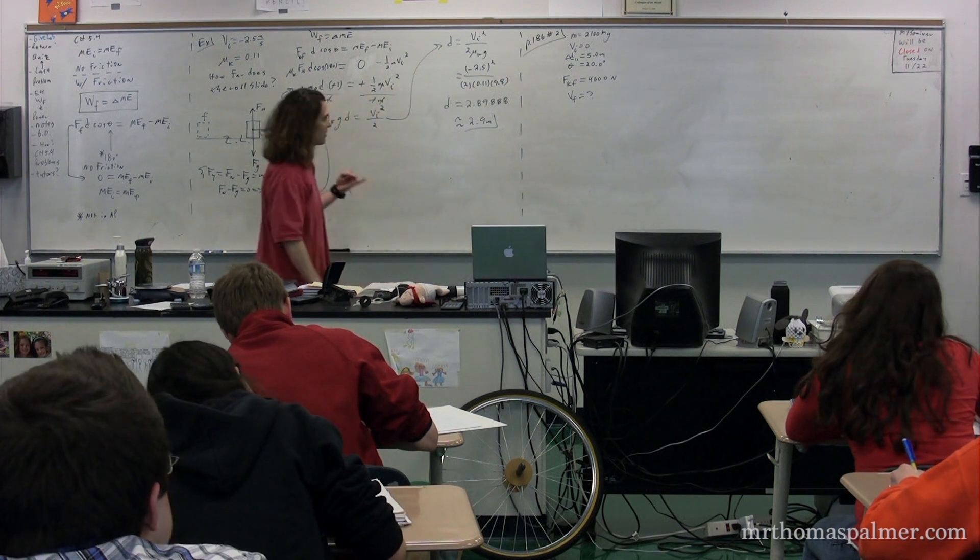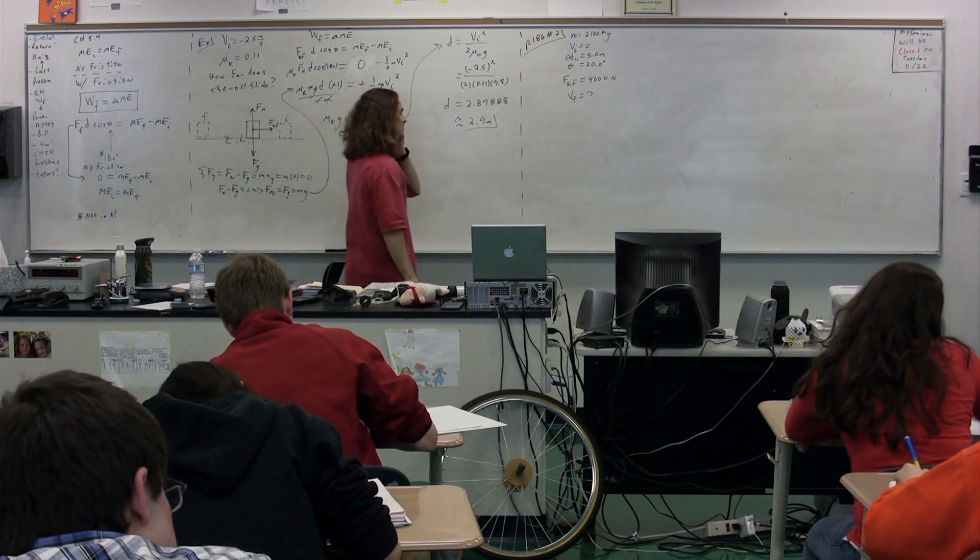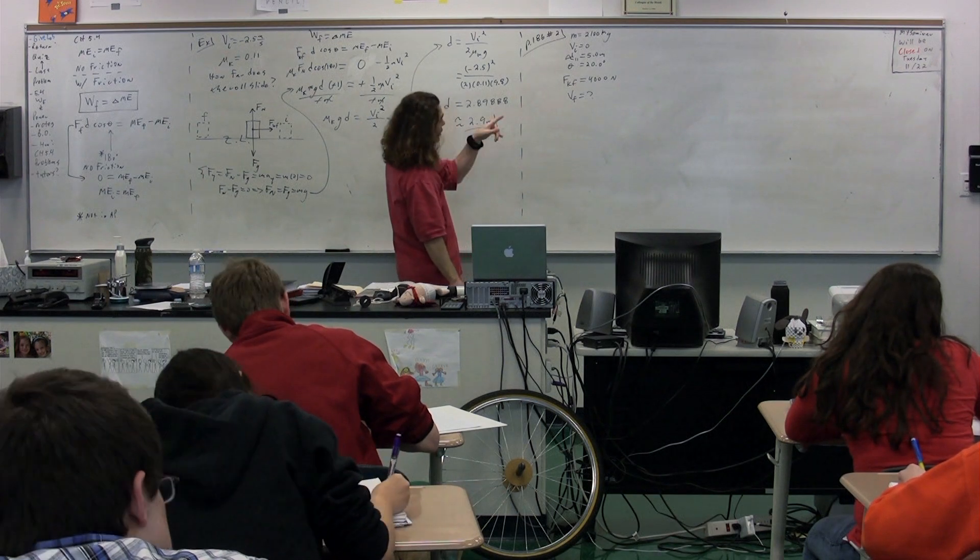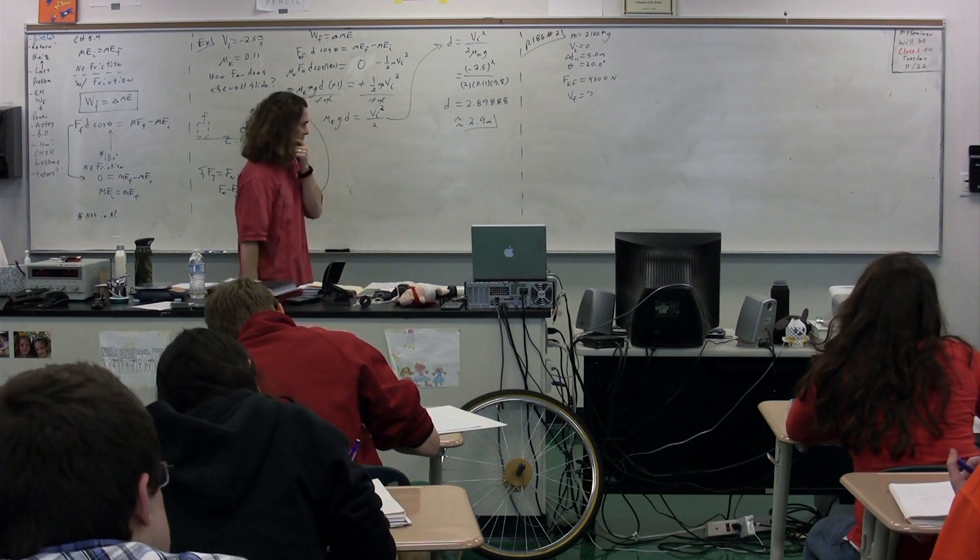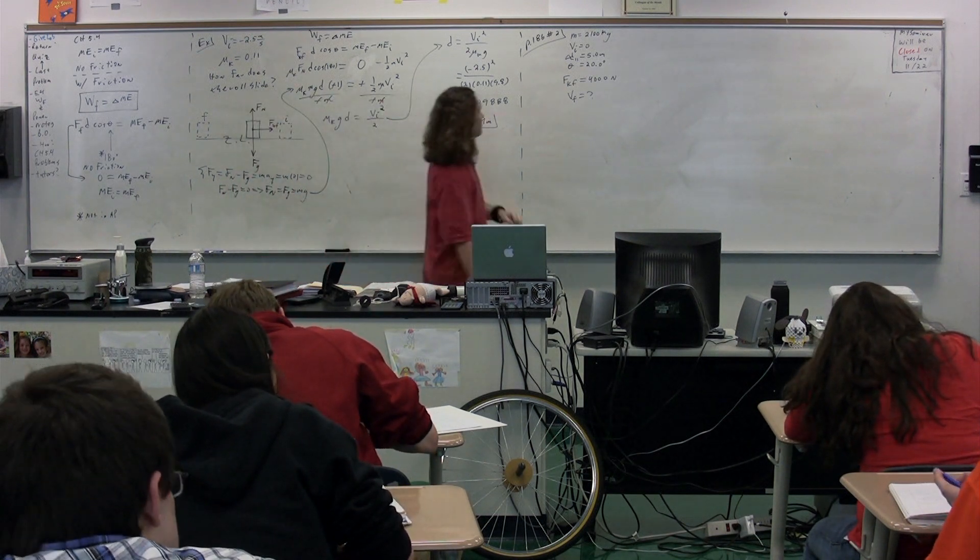So we have the mass of the car, we know it starts at rest, we know the displacement down the driveway because it's on an incline, so it's the displacement in the parallel direction. We know there's a constant force of kinetic friction of 4,000 newtons that impedes the motion, and we're looking for the velocity final.